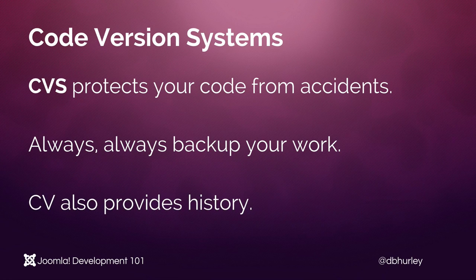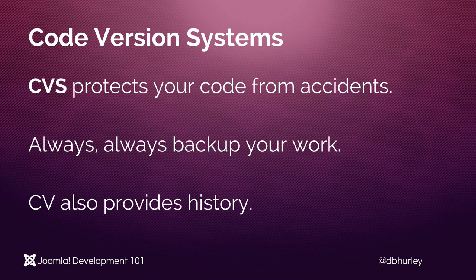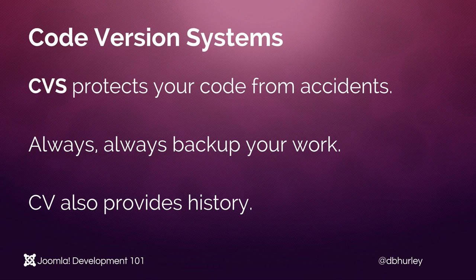Lastly, code version systems provide a history, so you are able to go back and look at exactly what has changed in any particular file that lives under version control. This is an extremely important aspect, as you want to make sure that if you accidentally introduce a failing change, you can easily roll back to an earlier version of the file. If you're working in a group setting, this allows you to see who has changed what file and at what point in time, and helps keep notes and records of all of those changes as they occur.